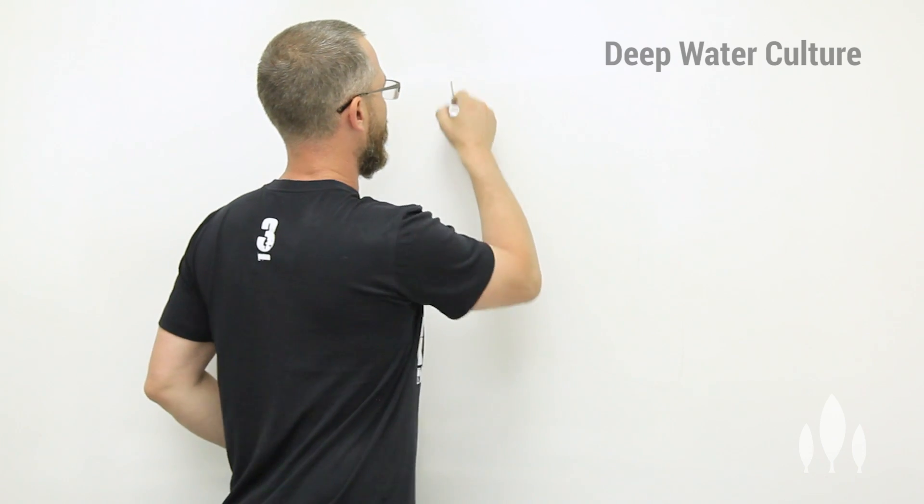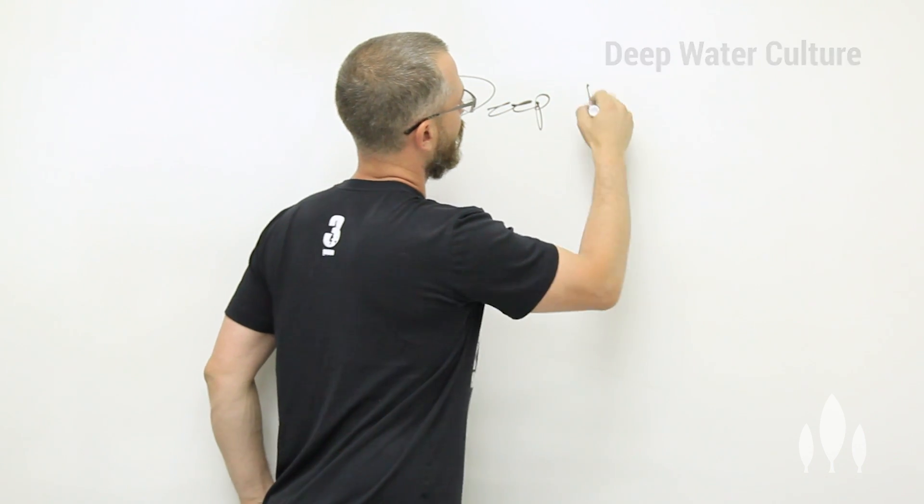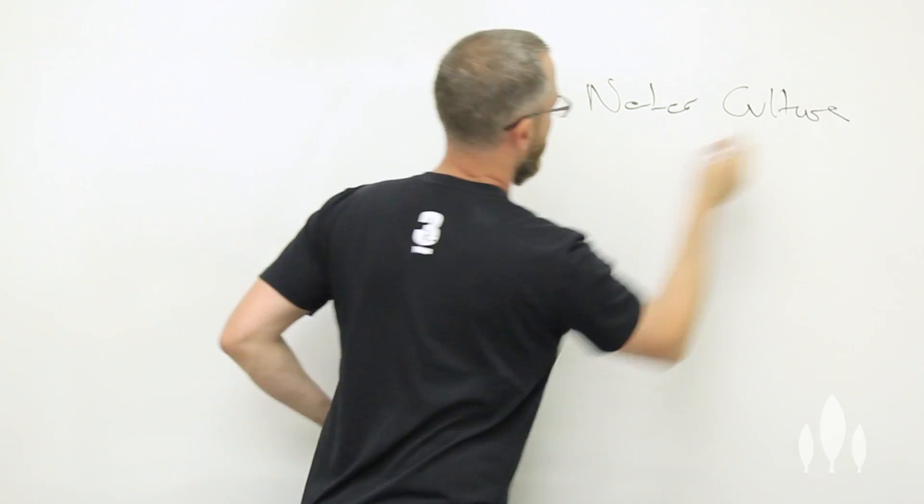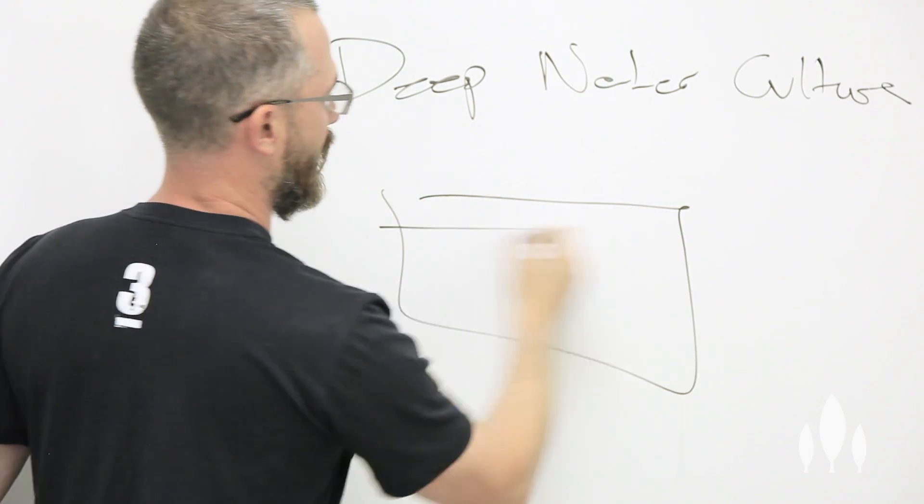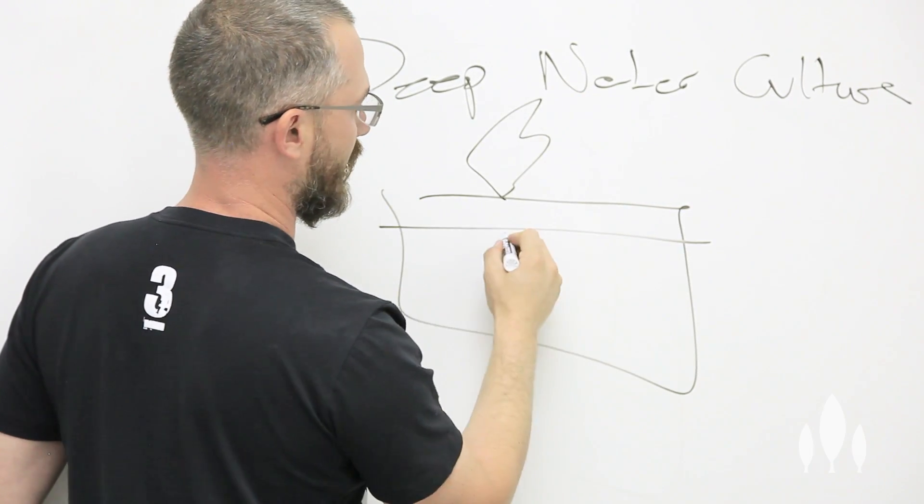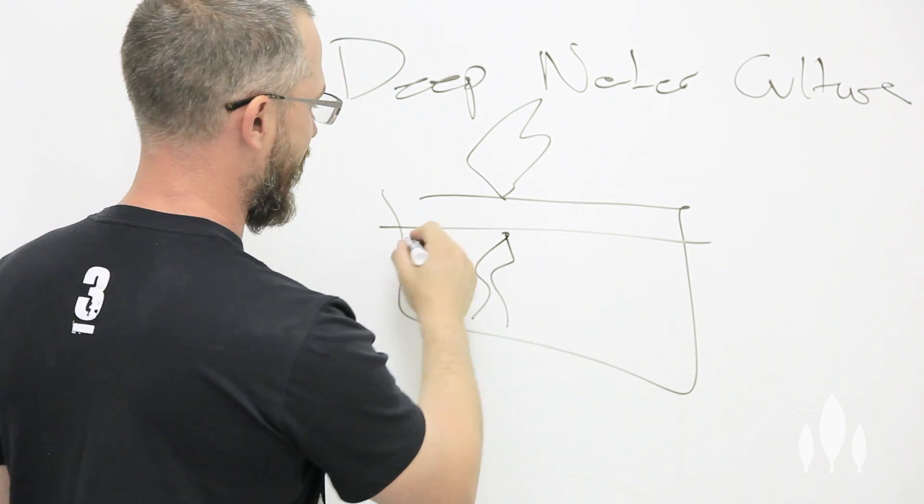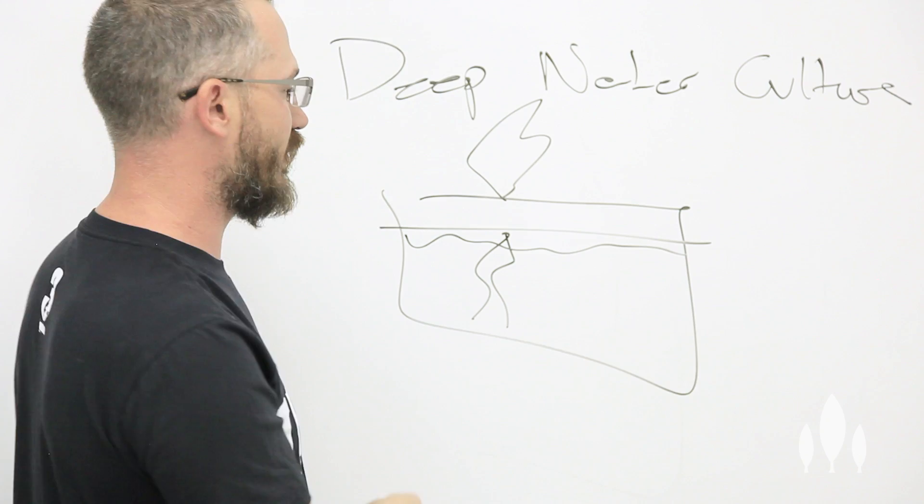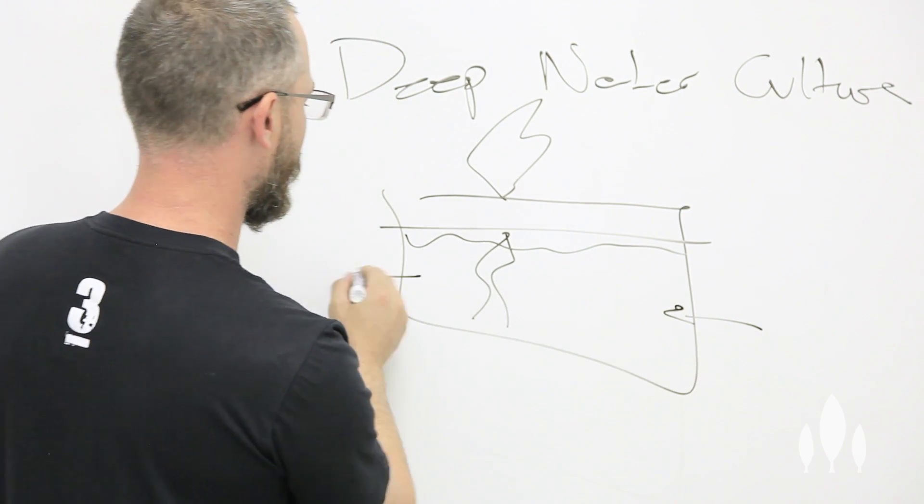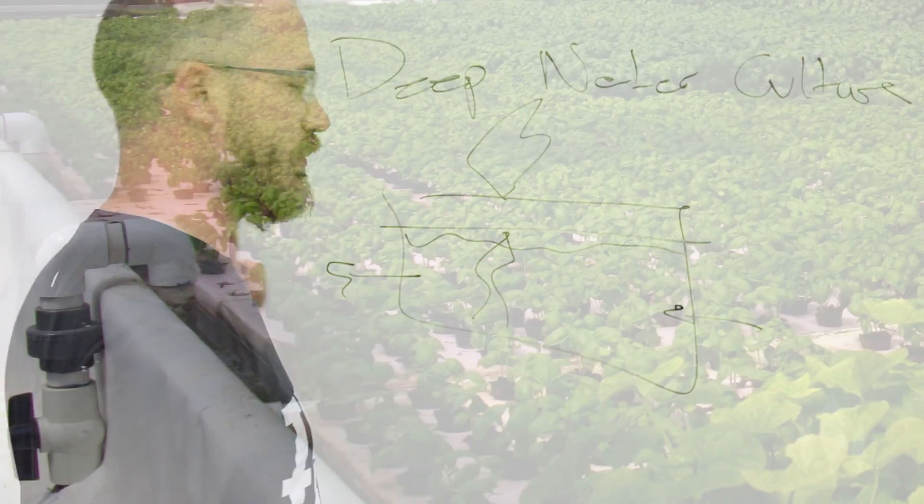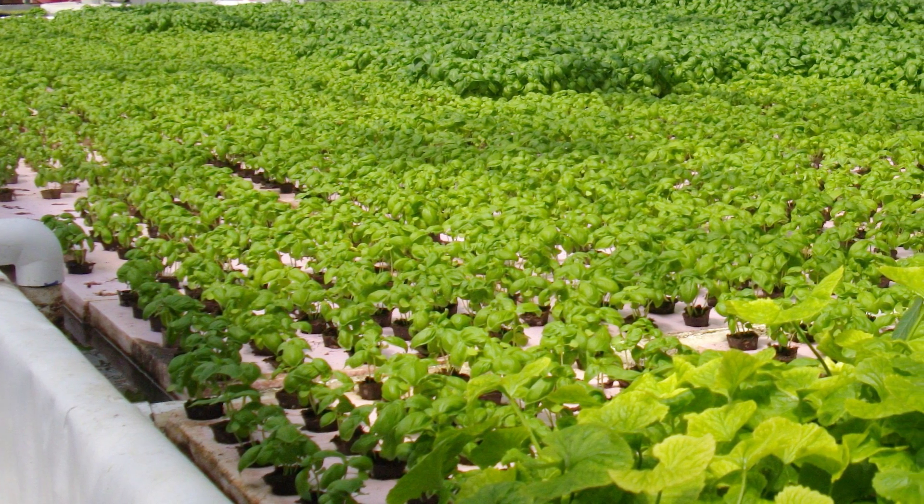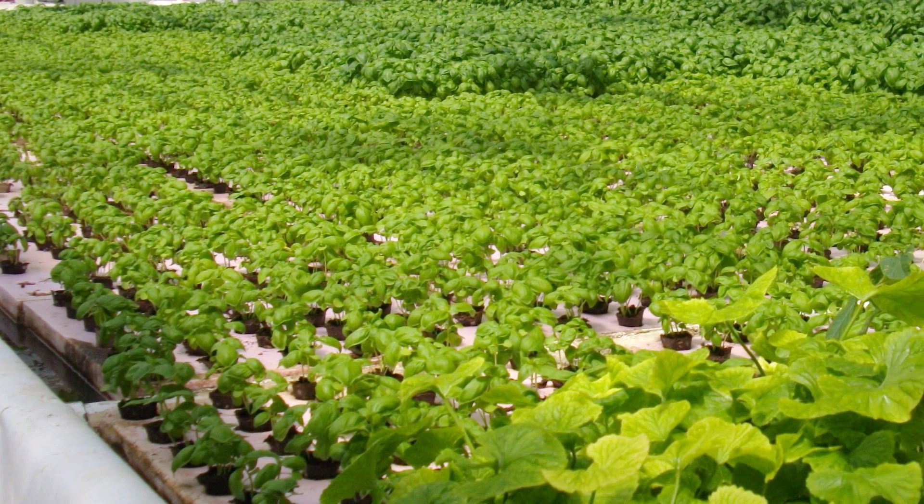So DWC is deep water culture, and it basically comprises of a raft on top of a tank. This has nutrient solution in it. The plant floats on the tank, the roots dangle down in the solution, and the solution is moved through this tank from a sump or from a mixing tank very slowly. And this is this growing technique, it's basically roots totally submerged in water.